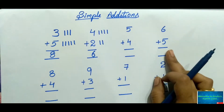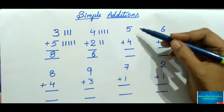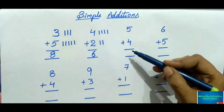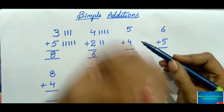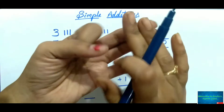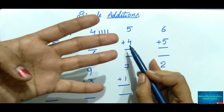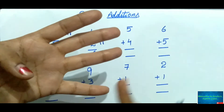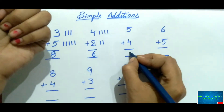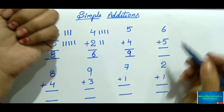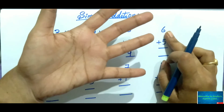The second method is using fingers. For five plus four, keep five in mind and open four fingers: one, two, three, four. After five, the next number is six, so count on: six, seven, eight, nine. The answer is nine.